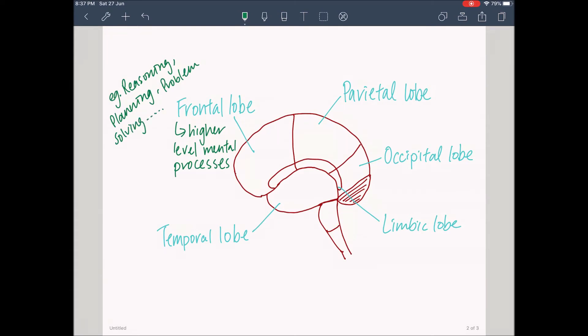The parietal lobe contains areas for somatic sensory and areas for motor movements. It is responsible for body awareness, orientation, and navigation.